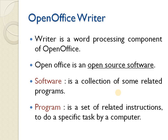OpenOffice is an open source software. Software is a collection of some related programs, and a program is a set of related instructions to do a specific task by a computer. For example, a calculator is a software because it has programs for addition, subtraction, multiplication, division, and square root — each is a small program, and the collection of those is the software.